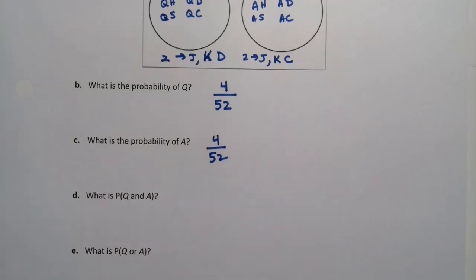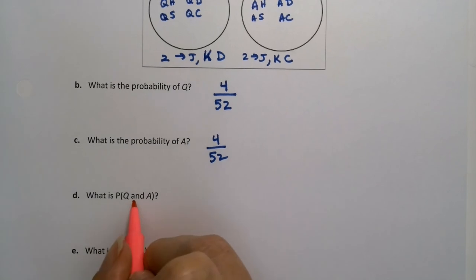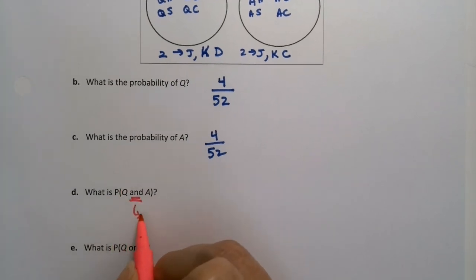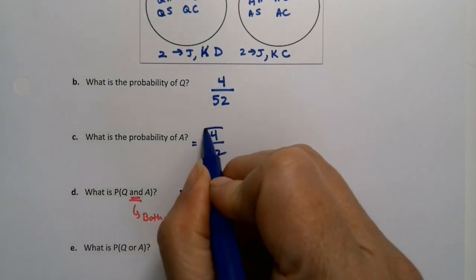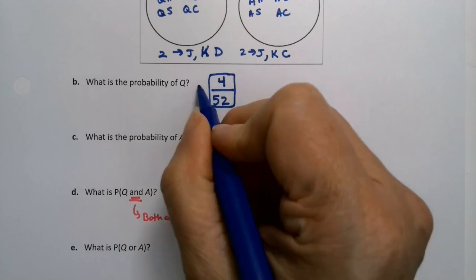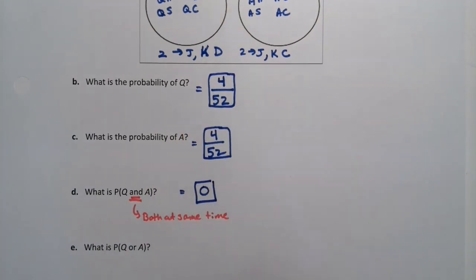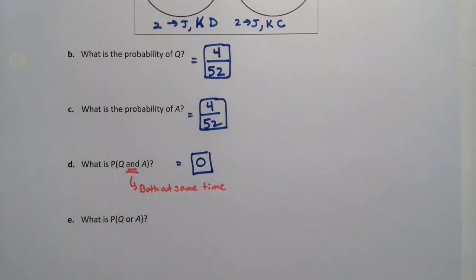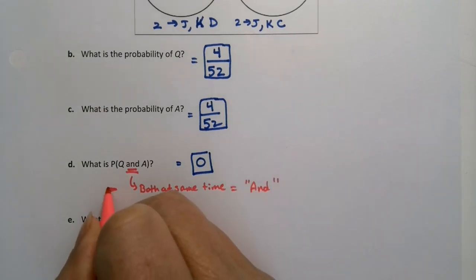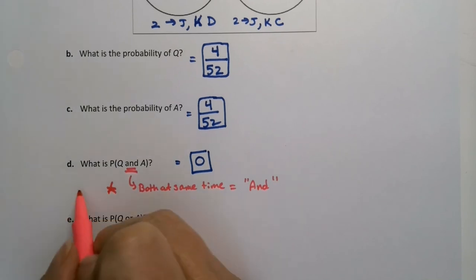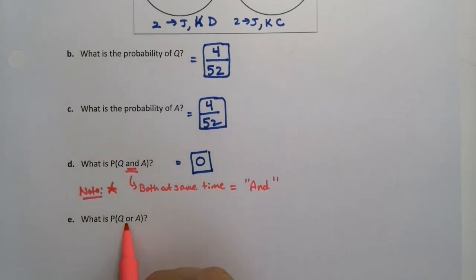Now, this is a little bit sneaky. When we say and, in probability, what that means is both at the same time. Well, that would be zero because that's impossible. You cannot be both a queen and an ace. You're either a queen or you're an ace, but you cannot be both. So and means both at the same time. Better write it down.